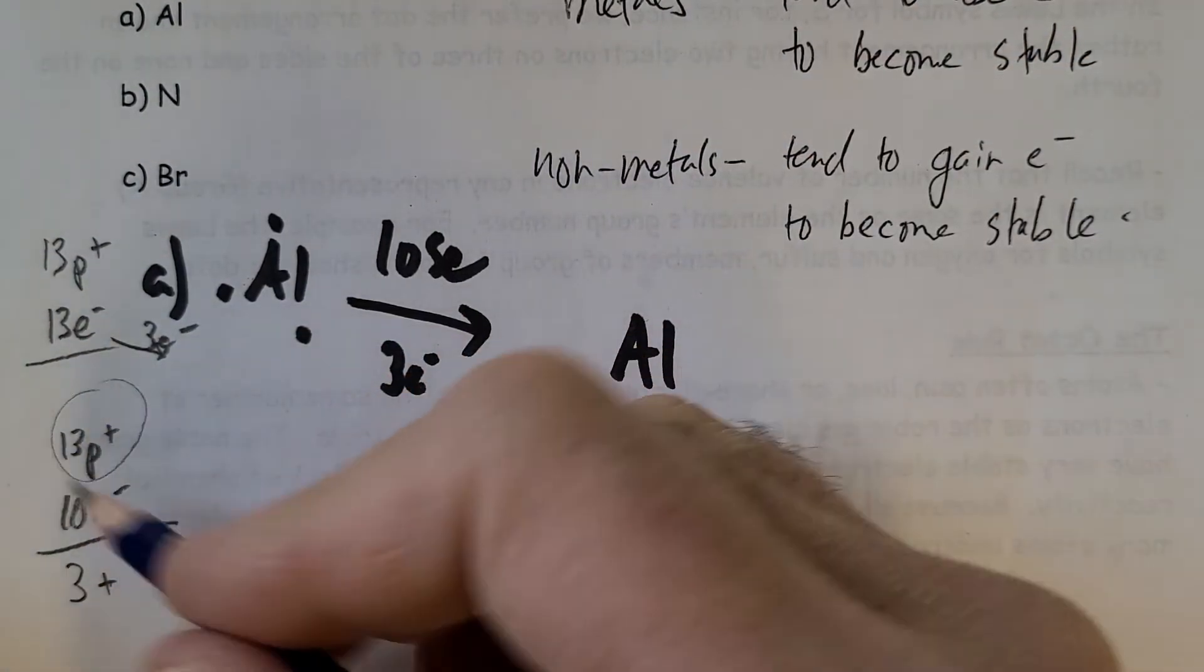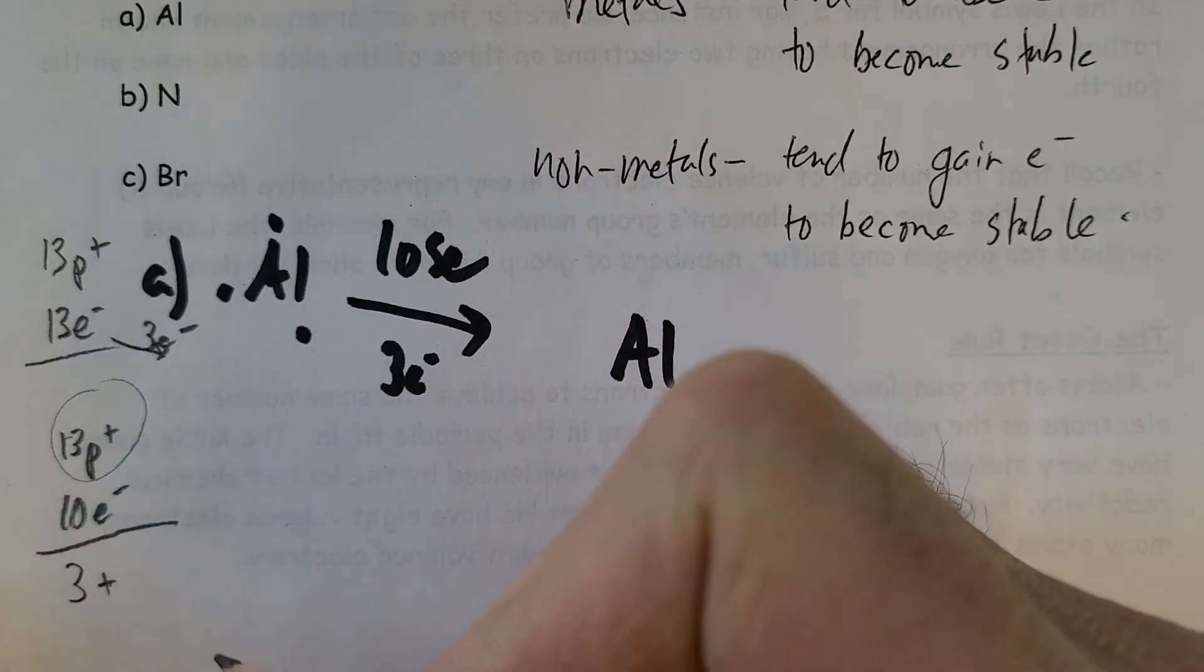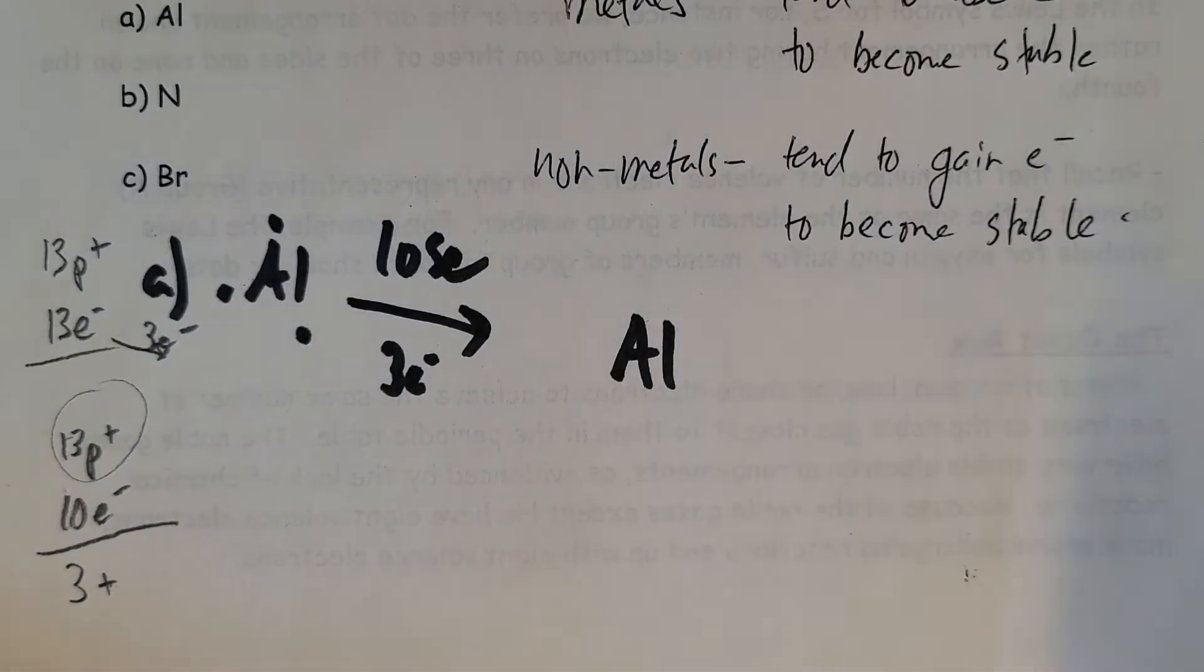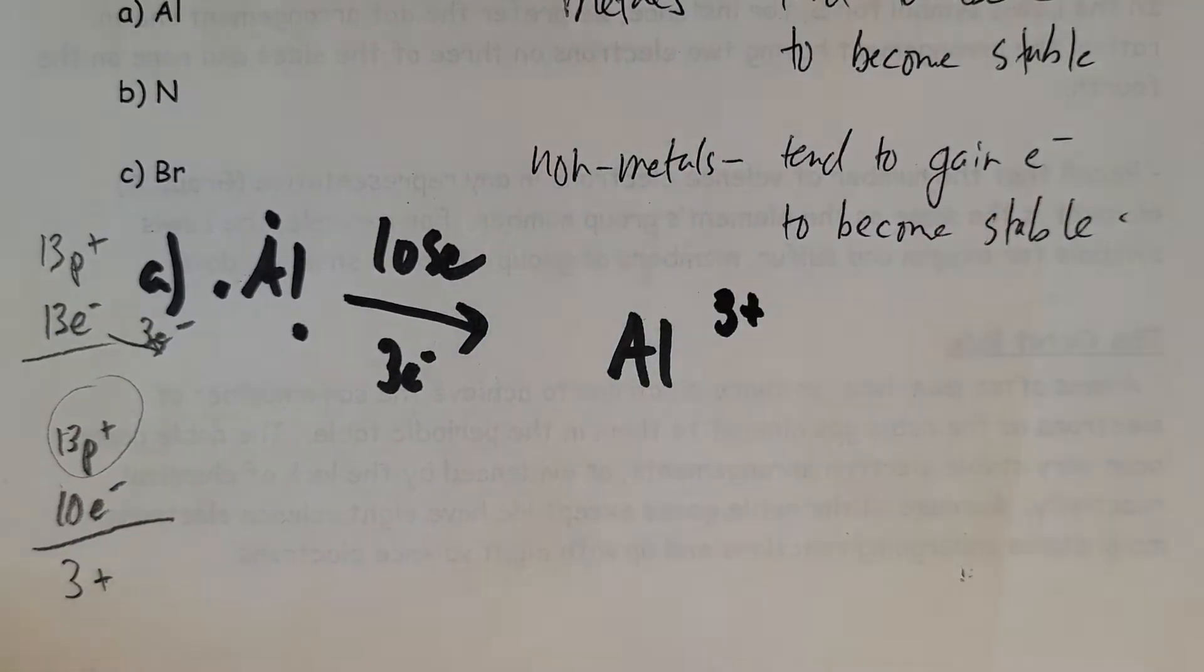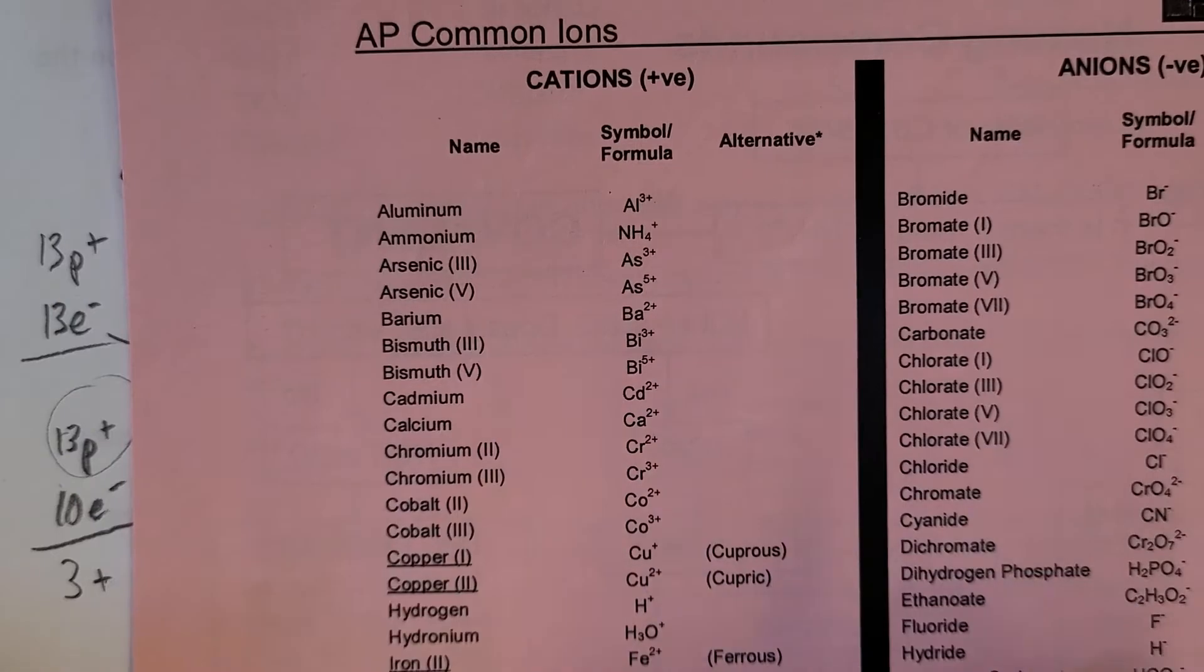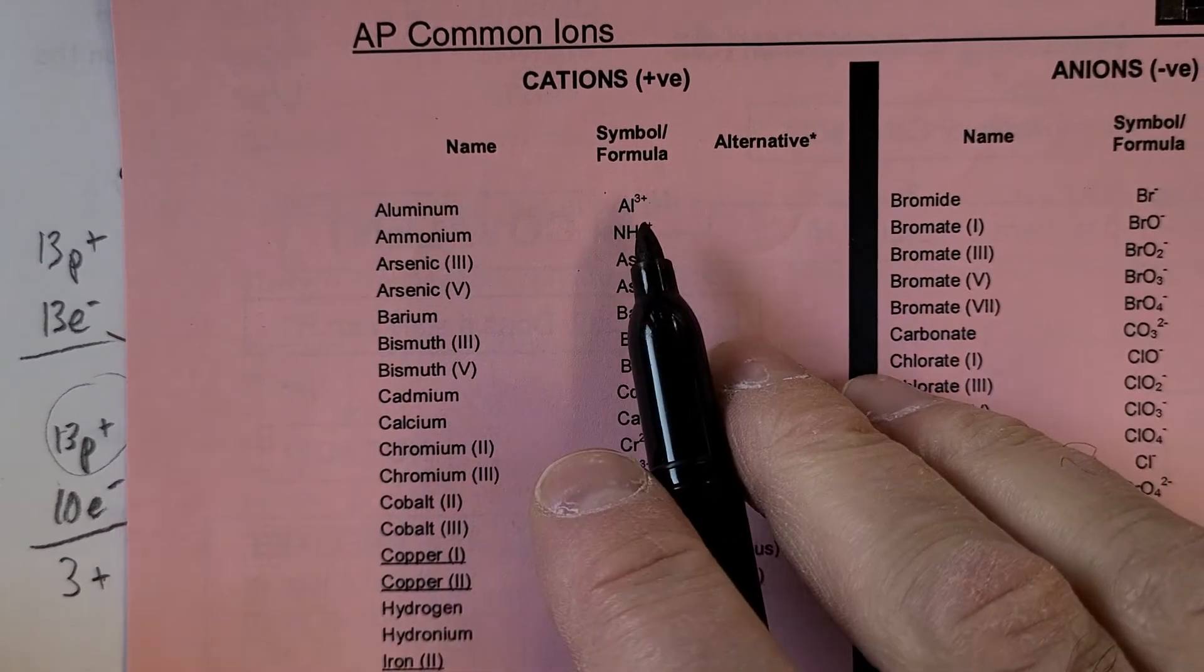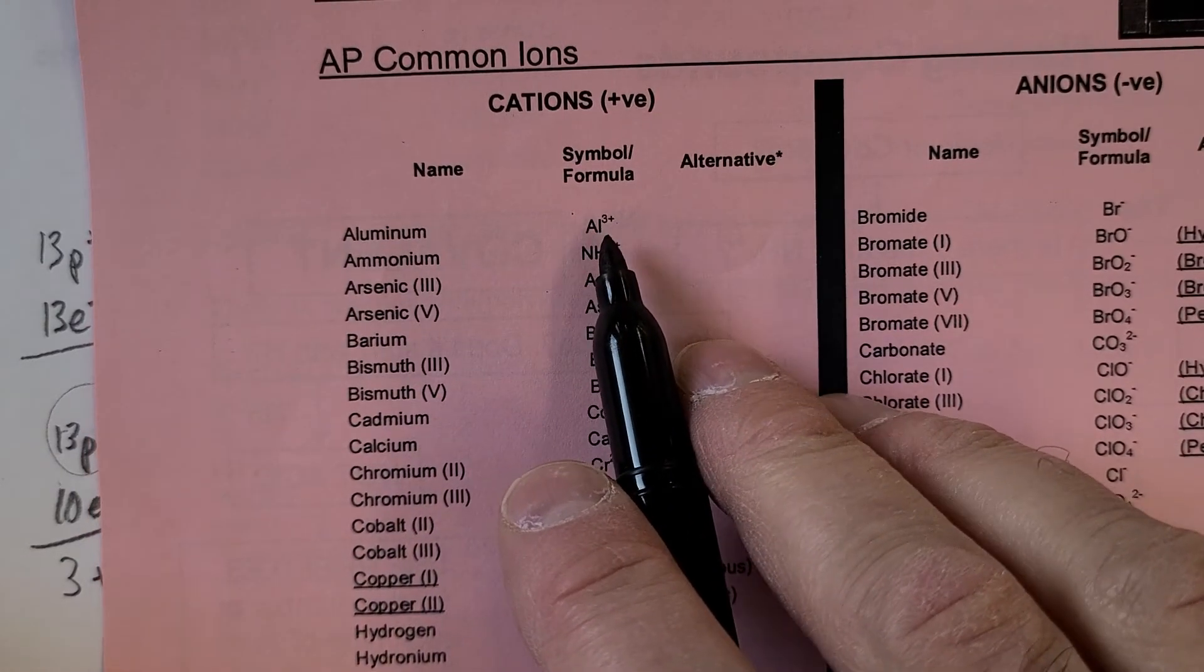And that gives us a net charge of three positive, because 10 electrons cancel with 10 protons, leaving us with three. So yes, aluminum becomes Al³⁺. And yes it does. If we look at our common ion chart at the back of our periodic table booklet, Al is 3+.